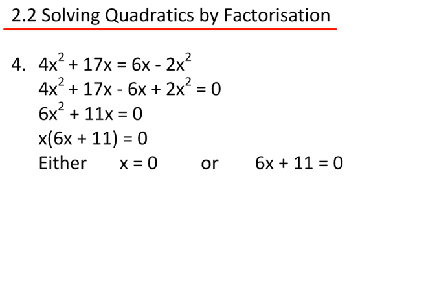So either x equals 0, or 6x plus 11 equals 0. Rearranging this, 6x equals minus 11, so x equals 0, or x equals minus 11 over 6.